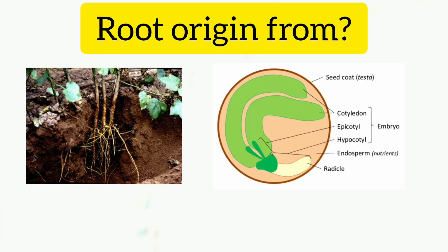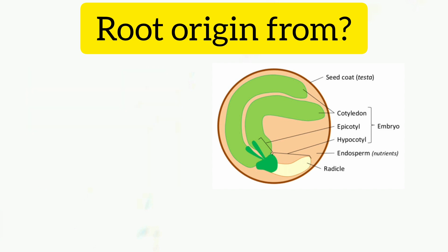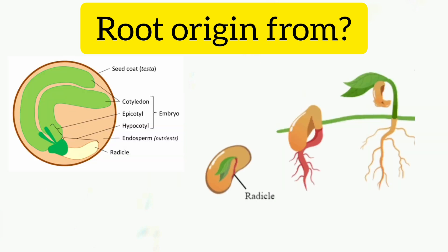Radicles are the embryonic form of meristematic cells. If you look at the embryo stage, the embryo is growing up. The first part of the plant is the radicle. Radicles are the root.